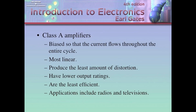Another topic in this chapter is classes of amplifiers. A class A amplifier is biased so that current flows throughout the entire cycle — you put in a 360-degree sine wave, you get out a 360-degree sine wave. Because of this, it's considered the most linear and produces the least amount of distortion. However, it also has lower output ratings and is the least efficient.